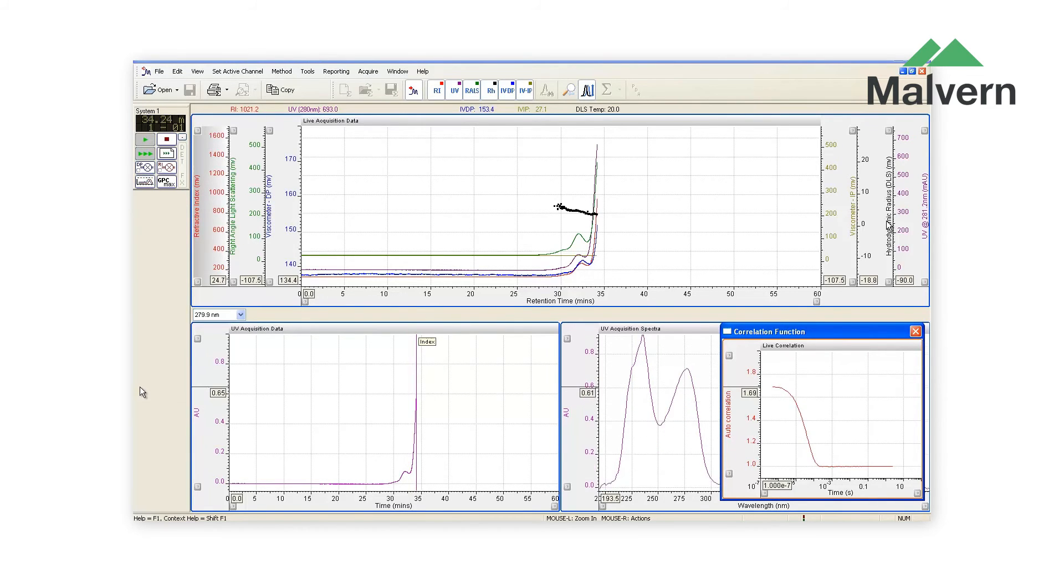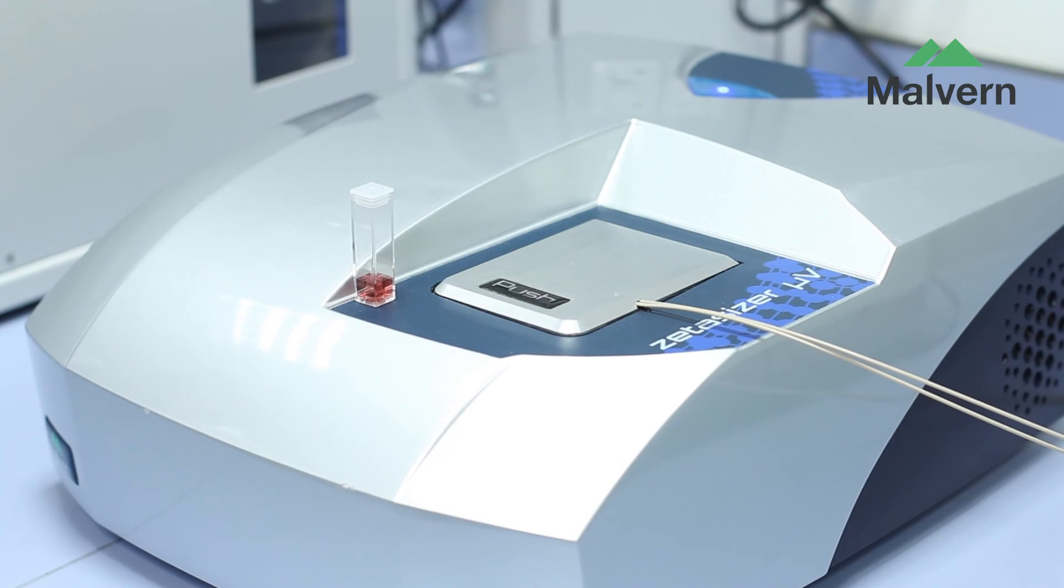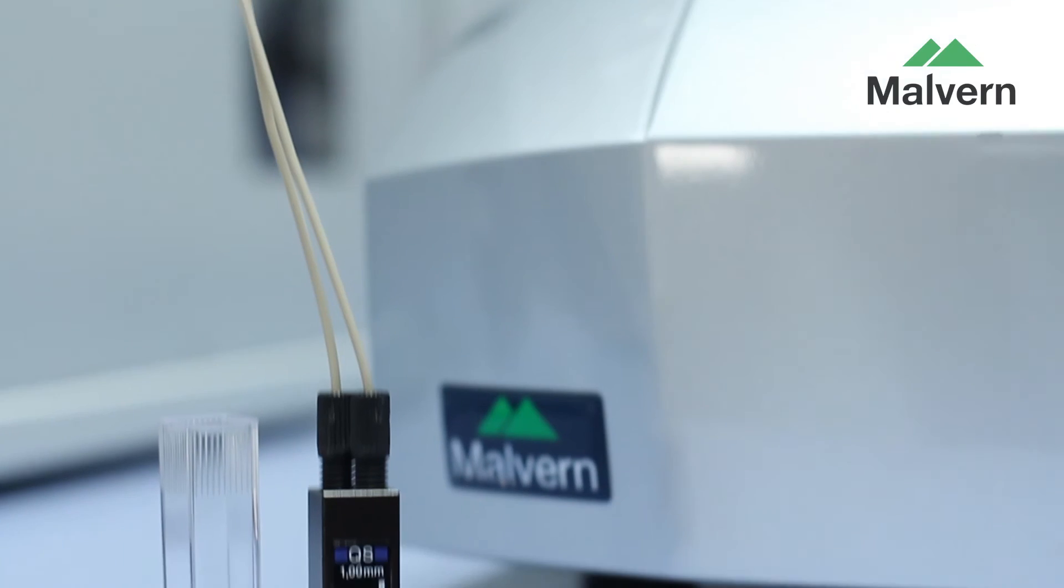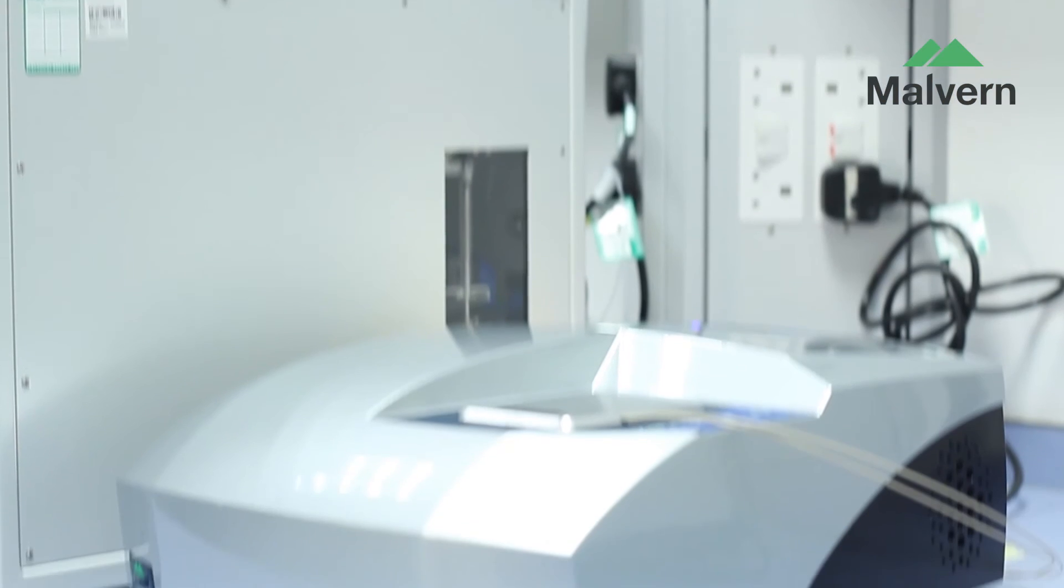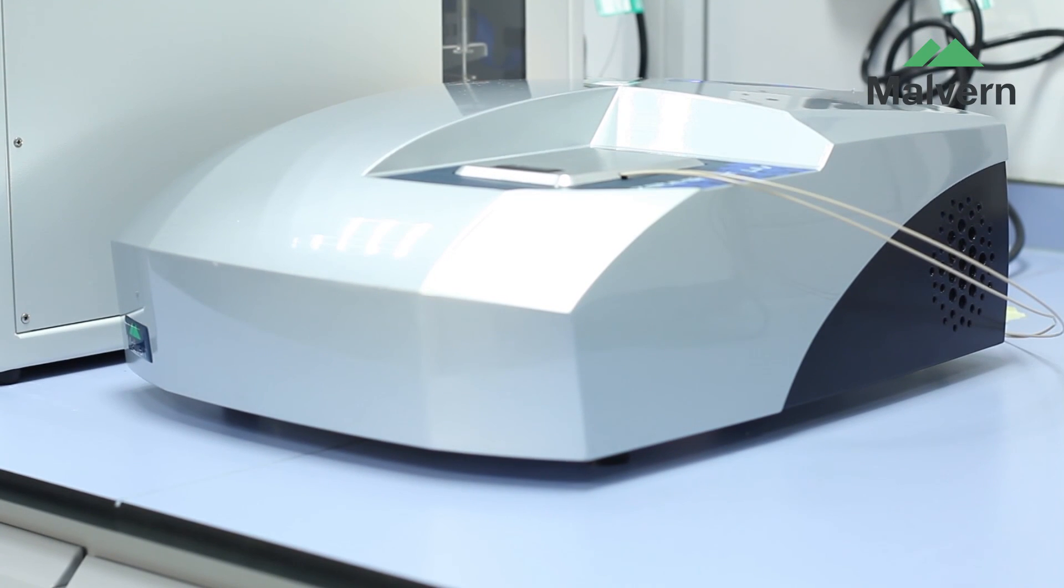The class-leading Omnisec software allows full and rapid access to both raw data and calculated results. For ultimate versatility and sensitivity, the Zetasizer Micro V enhances your capabilities for both batch DLS and SEC measurement of proteins.